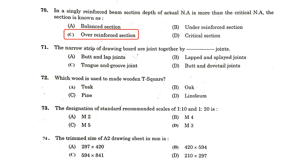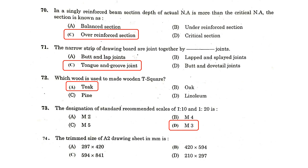The narrow strips of a drawing board are joined together by tongue and groove joints. Which wood is used to make a wooden T-square? Teak. The designation of standard recommended scales of 1:10 and 1:20 is M3. The trimmed size of an A2 drawing sheet in mm is 420 × 594 mm.